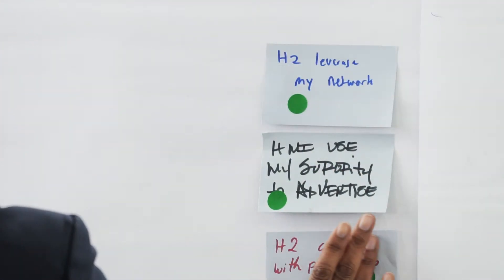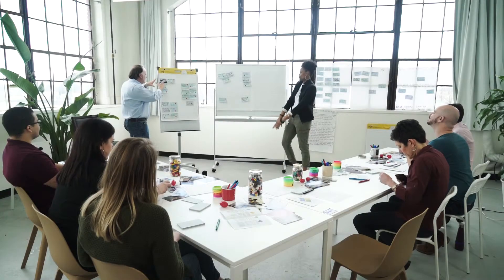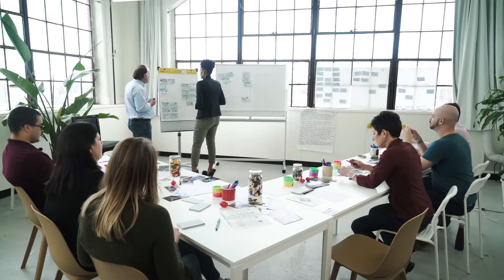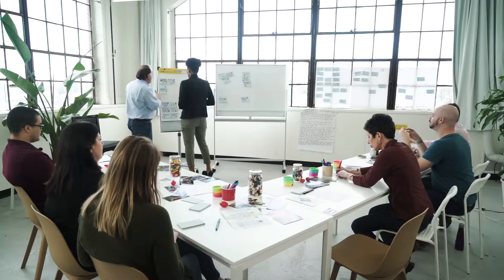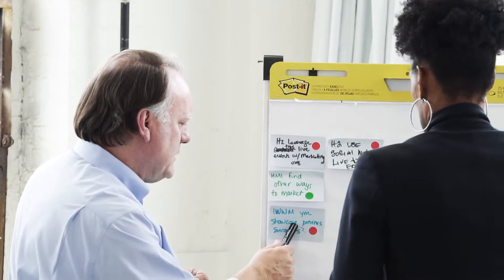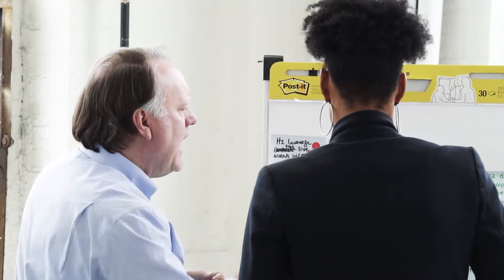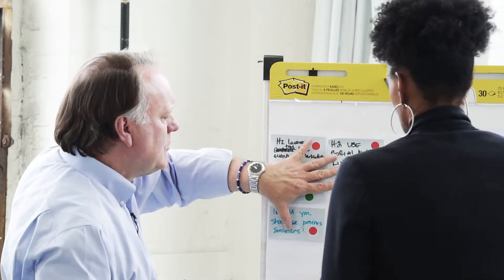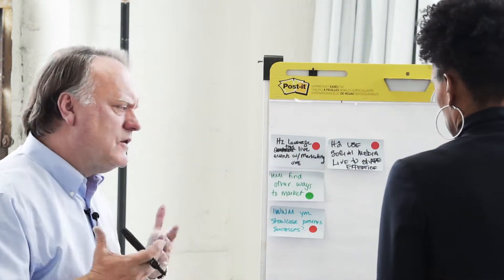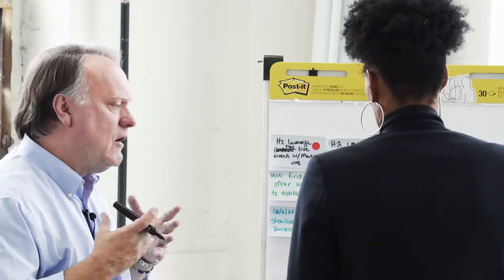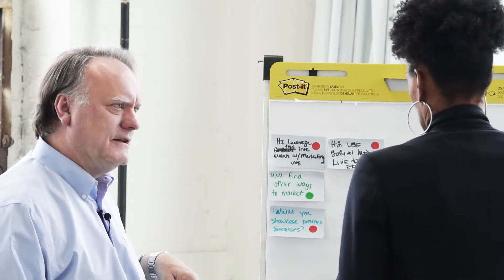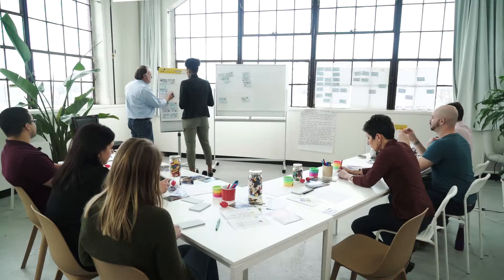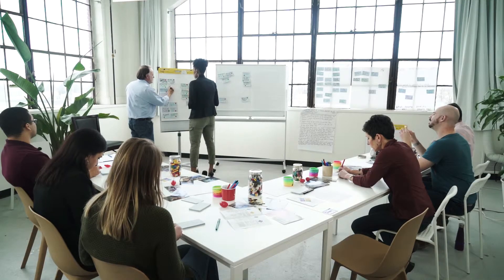So what we're going to do now is label these clusters. So Tamara, what does this cluster represent to you? We're going to phrase it with 'how to,' 'how might,' or 'in what ways might.' Some examples here include: how to leverage live events, how to find other ways to market, how might you showcase previous successes, how might we use media live to share experience. So what does this represent to you as a creative question, beginning with 'how to,' 'how might,' or 'in what ways might'? How to create a marketing plan.